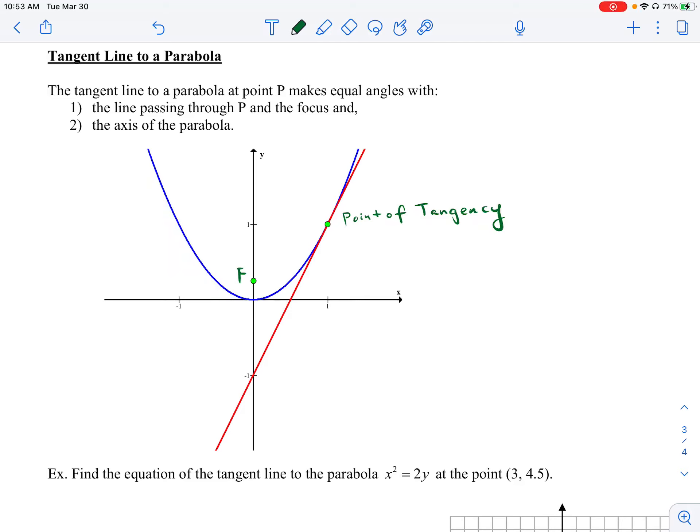All right, so the final type of problem I want to discuss with parabolas is how to write the equation of a tangent line to a parabola. Remember, the tangent line is a line that crosses or touches an object or graph at a single point, which we call the point of tangency.